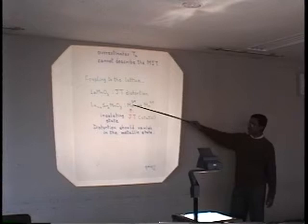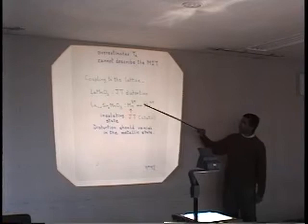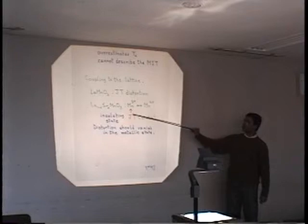So even here you would expect Jahn-Teller, static Jahn-Teller distortion in this system. But remember, as soon as these holes get delocalized, this Jahn-Teller distortion which is static should vanish.